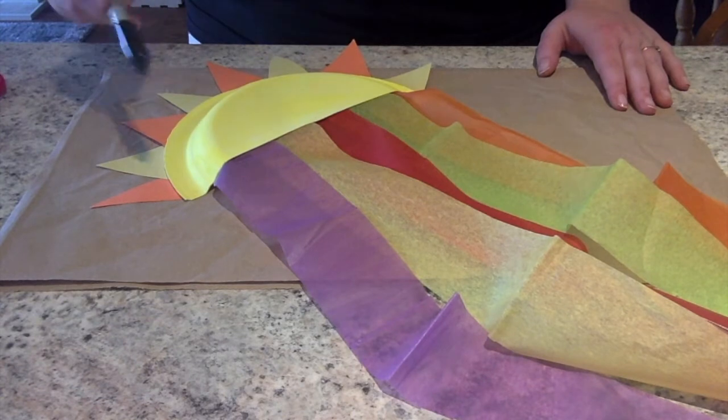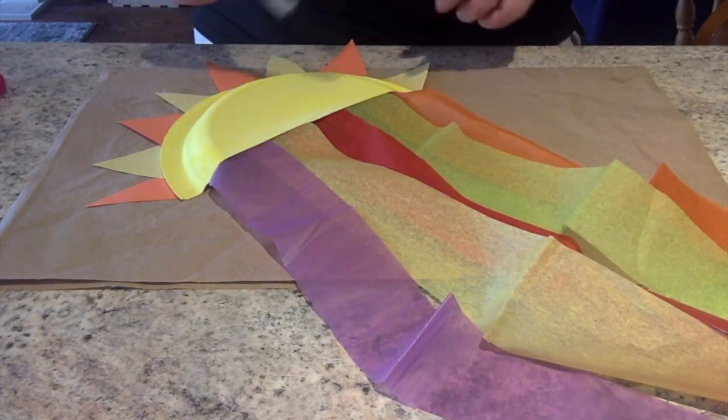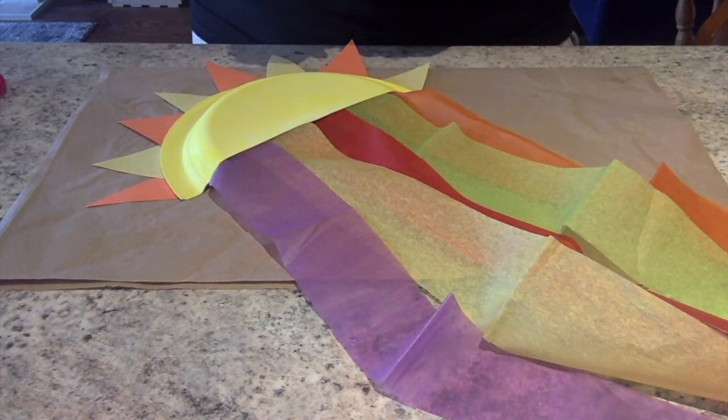When you finish gluing on all of your triangles and your rainbow pieces, you are going to take your black marker and we're going to draw a smiley face on our sunshine.